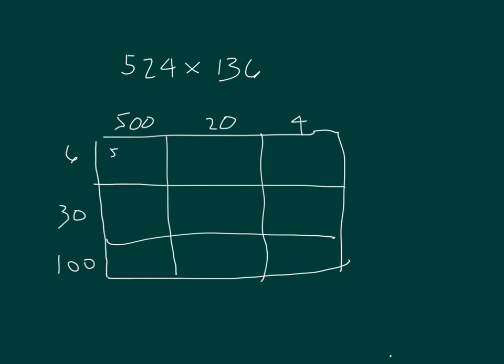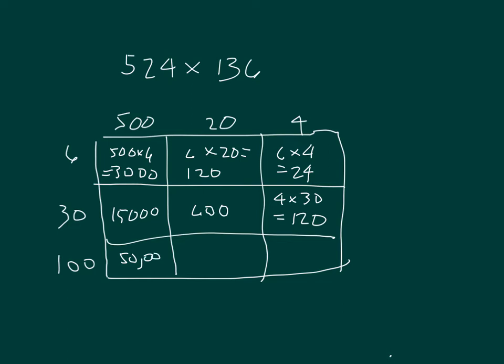500 times 6 which is 3000. 6 times 20 which equals 120. 6 times 4 equaling 24. 30 times 500 which is 15,000. 30 times 20 which equals 600. 4 times 30 which equals 120. And we have our 100 times 500 is 50,000, 2,000 and 400.